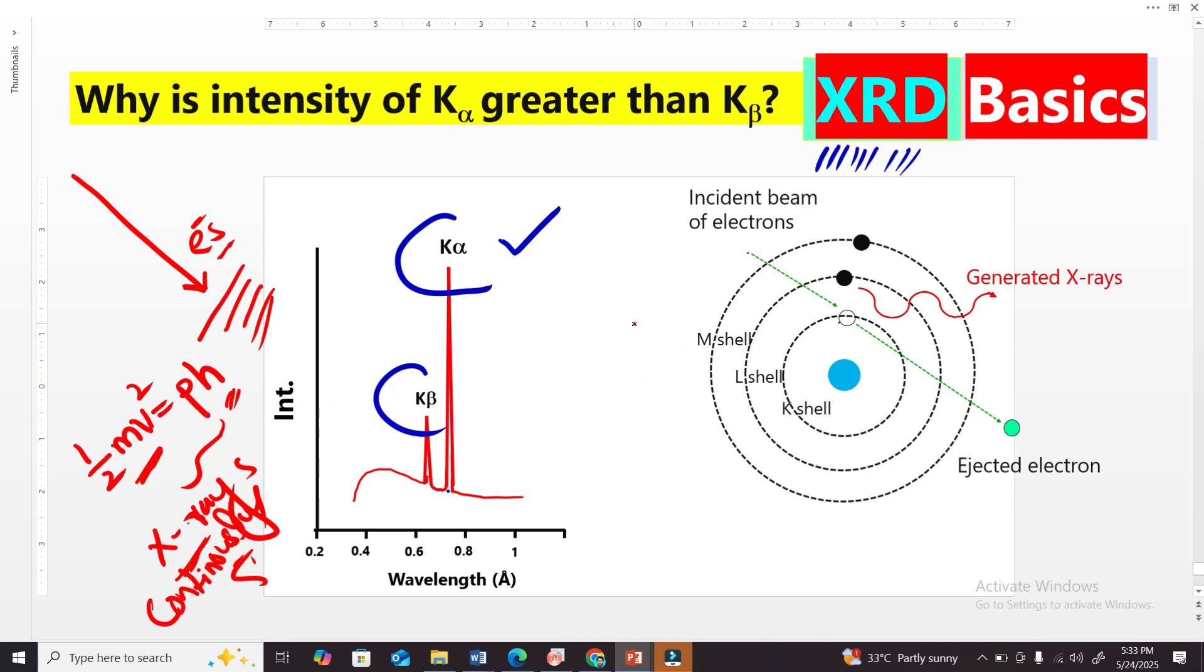Now we know that every material is basically composed of a large number of atoms, billions or trillions of atoms, right? So when we use very high energetic electrons, the electrons can reach to the core level of the atom.